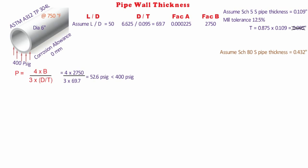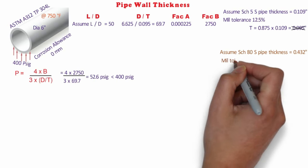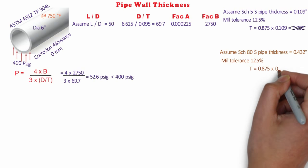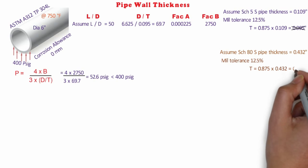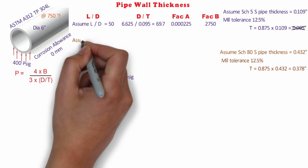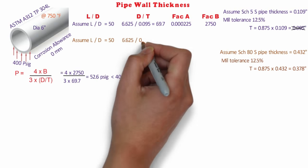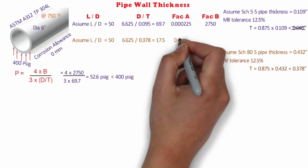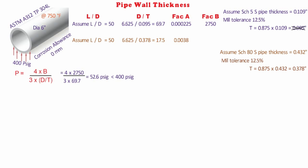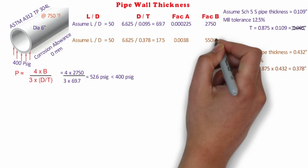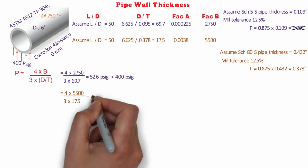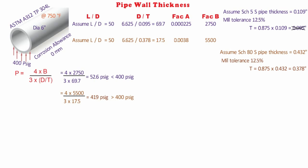Therefore, we are assuming a higher thickness value - 80S pipe, which gives nominal thickness of 0.432 inches. Minimum thickness is 0.875 × 0.432 = 0.378 inches. Now the D₀/t value is 17.5. The factor A for the new value of D₀/t is 0.0038. Corresponding value of factor B is 5,500, so the allowable pressure becomes 419 psig, which is more than our design pressure given. So we are selecting an 80S schedule pipe.